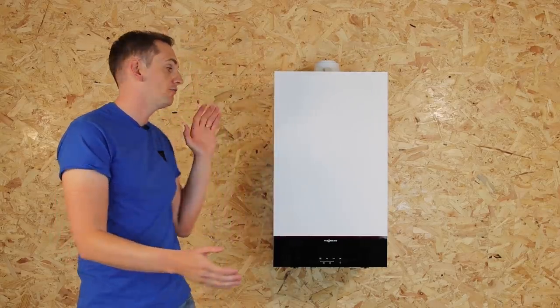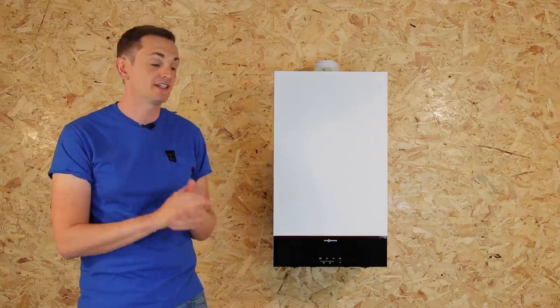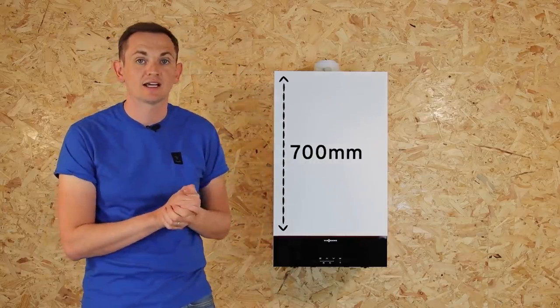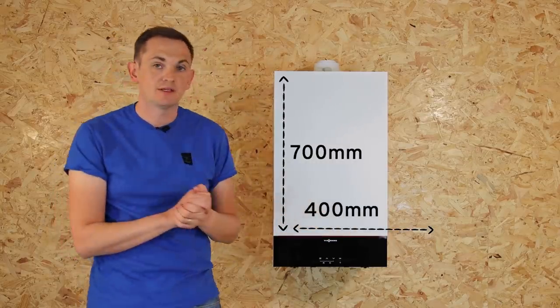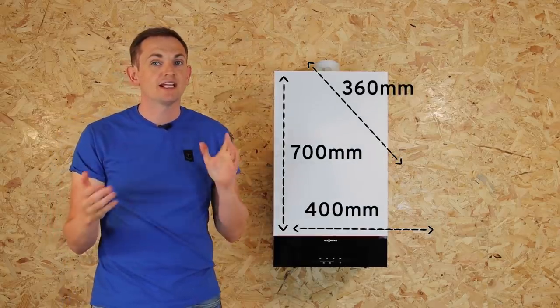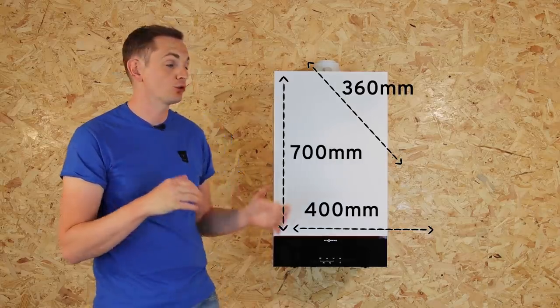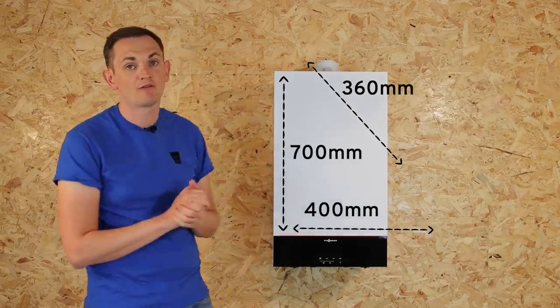Dimensions wise, the boiler to us looks a lot bigger than it actually is, but it is only 700 millimetres high, 400 millimetres wide and 360 millimetres deep. So it's only about 10 millimetres deeper than the previous model. It just looks a lot bigger because of the square edge design.